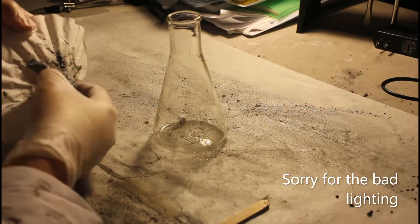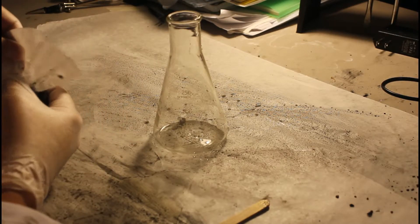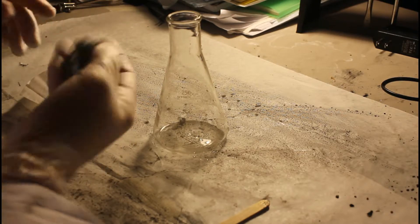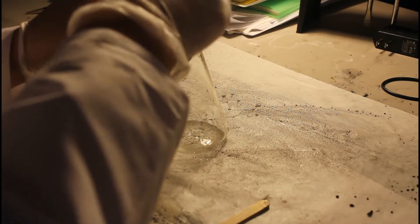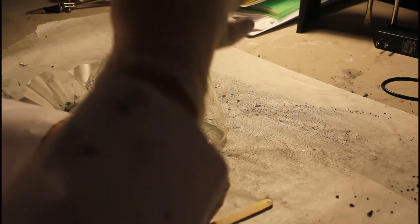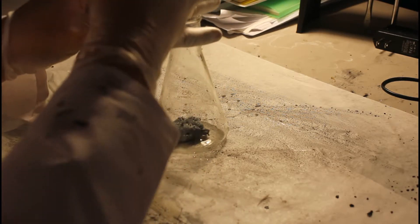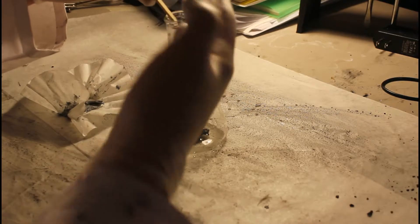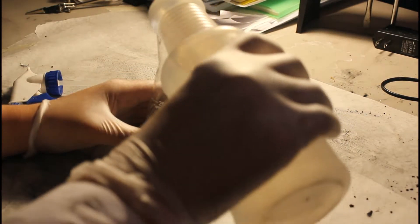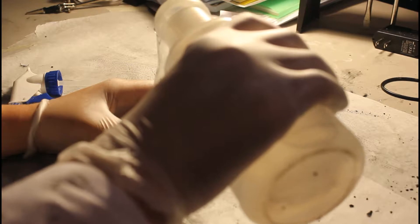First, the zinc paste we collected is added to a 250 milliliter Erlenmeyer flask. This will be the primary washing vessel. Once all of the zinc is in the flask, deionized water in a wash bottle is used to wash the paste off of the inside of the glass. The flask is then topped off to 250 milliliters with deionized water.